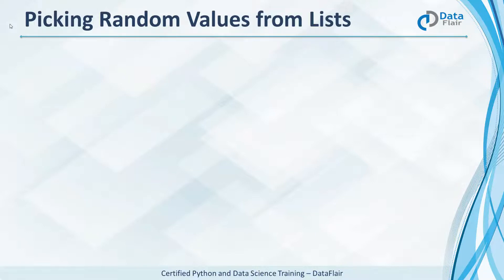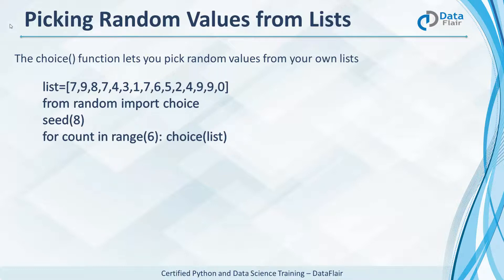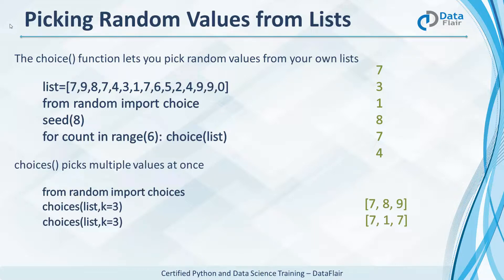So far we've seen how to generate random numbers within intervals or ranges. But what if you wanted to pick a random value from a list you've built? The choice function lets you do this. We have a list, seed is 8, and we print 6 choices — the output contains 6 values randomly picked from the list. If you'd like to pick multiple values at once, choices will do it for you. From the list, pick 3 values.